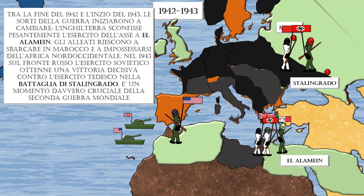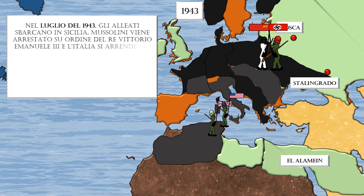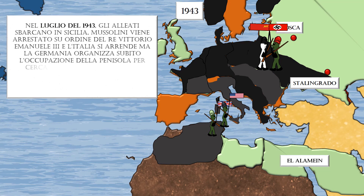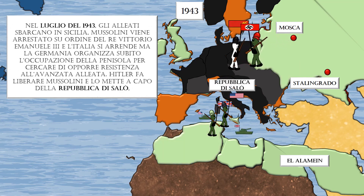In July 1943, the Allies landed in Sicily. Mussolini was arrested on the orders of King Victor Emmanuel III, and Italy surrendered. However, Germany immediately organized the occupation of the Italian peninsula to resist the Allied advance.